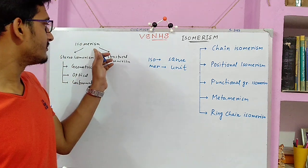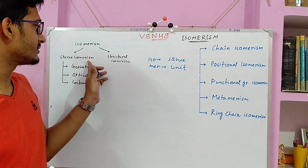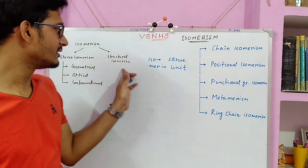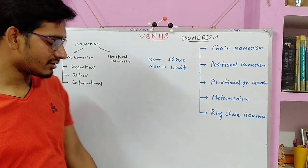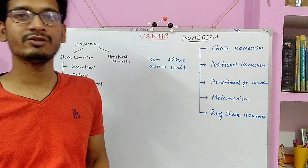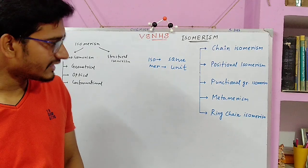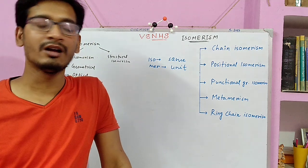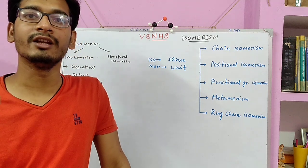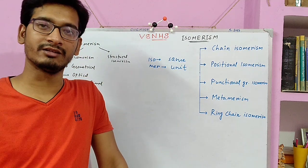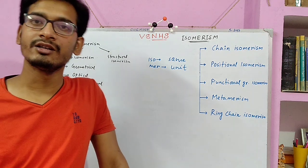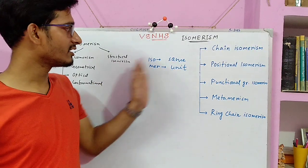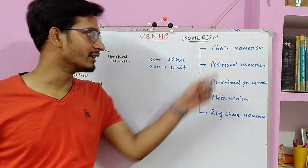Isomerism is broadly classified into two types: stereoisomerism and structural isomerism. Structural isomerism is that in which the organic compound has the same molecular formula but different bonding connectivity, and hence different chemical properties. This structural isomerism is classified into five types.